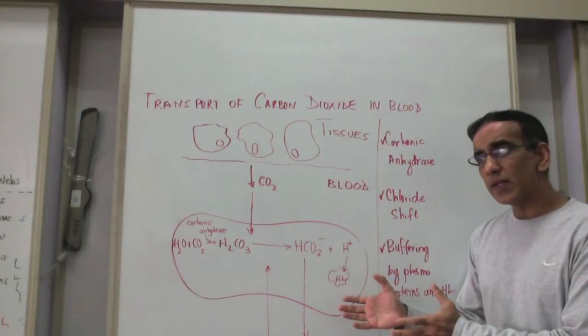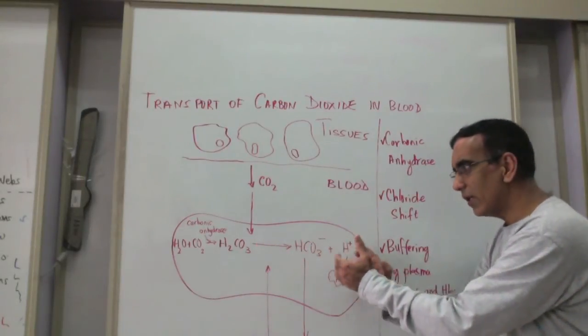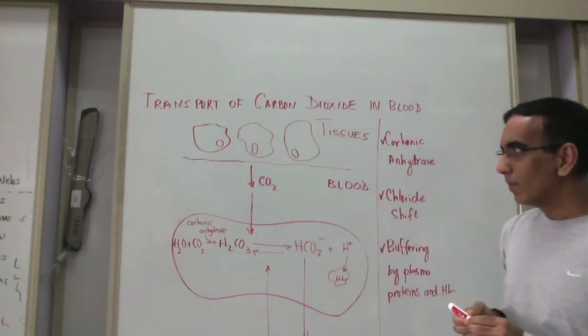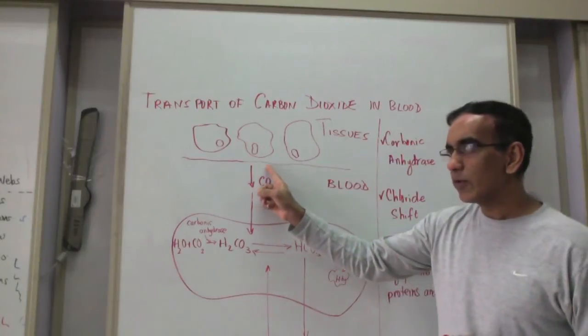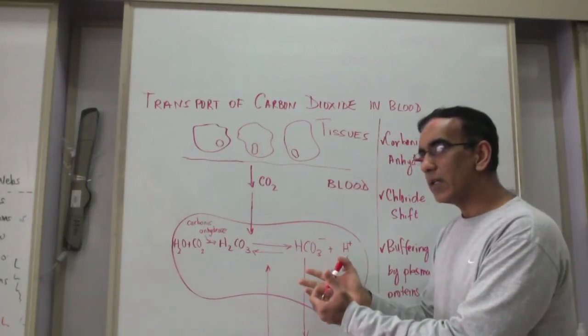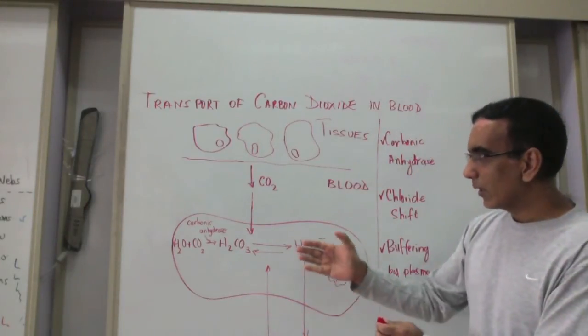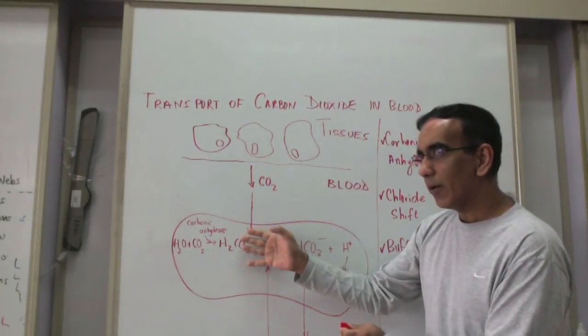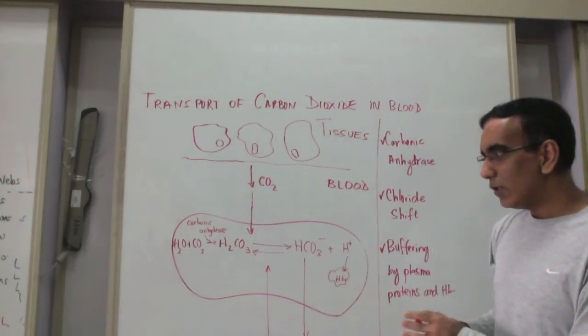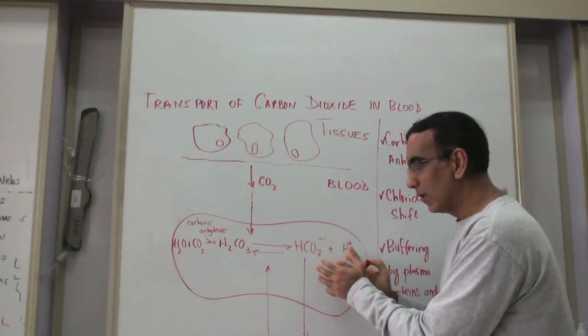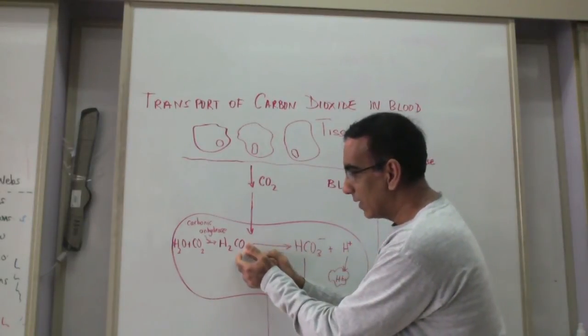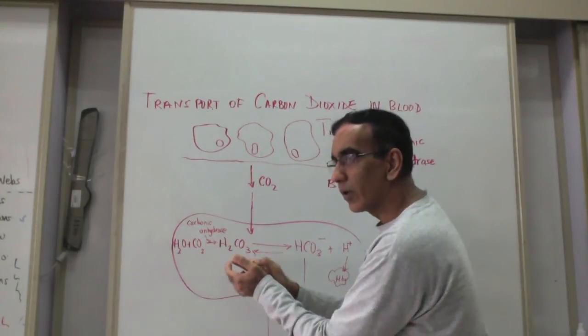When blood reaches the lungs, the whole equilibrium that exists here and gets driven in one direction would move in the opposite direction. For now, the concentration of carbon dioxide in the lungs would be a lot lower than what it is in the blood. And therefore, carbon dioxide would tend to diffuse out of the blood and into the alveolar spaces. And in doing so, hydrogen carbonate ions would re-associate with hydrogen ions to form carbonic acid and then to return to water and oxygen.